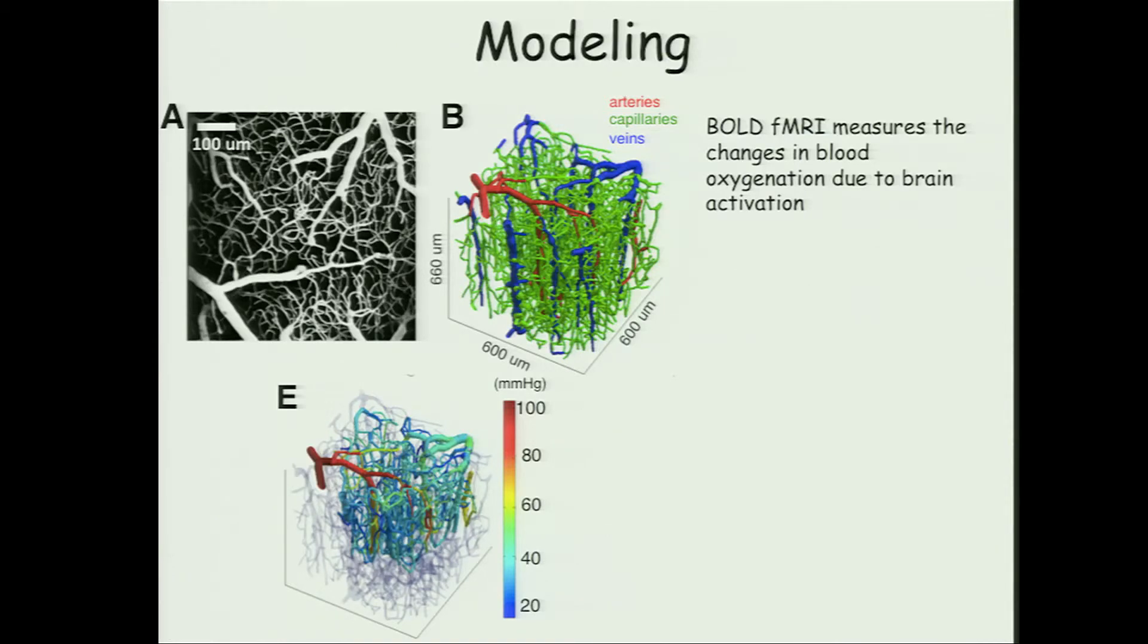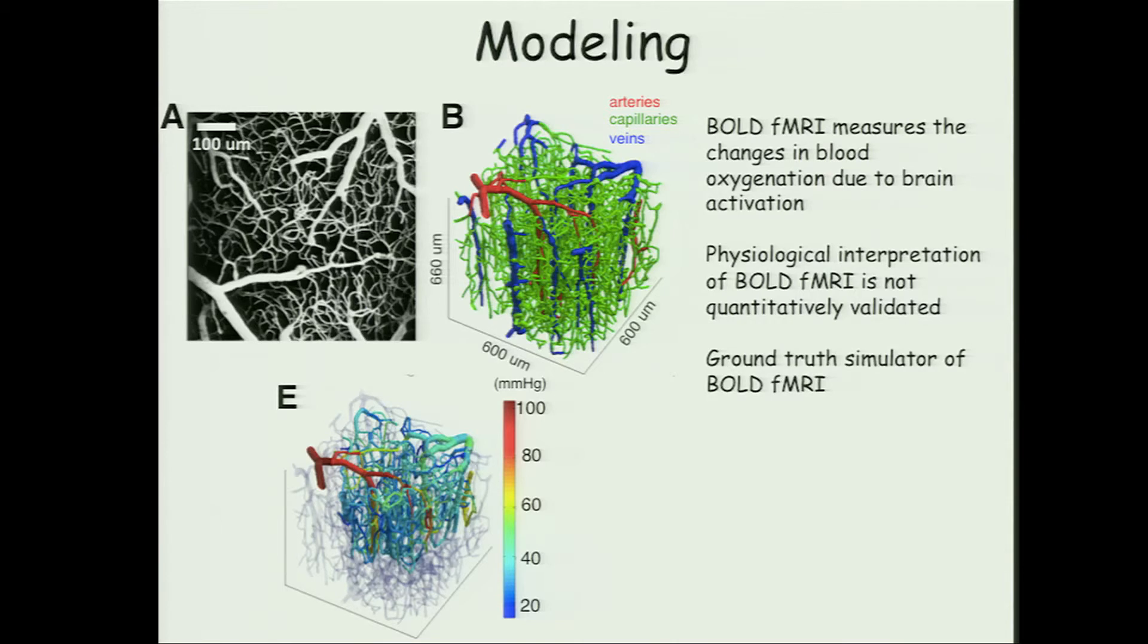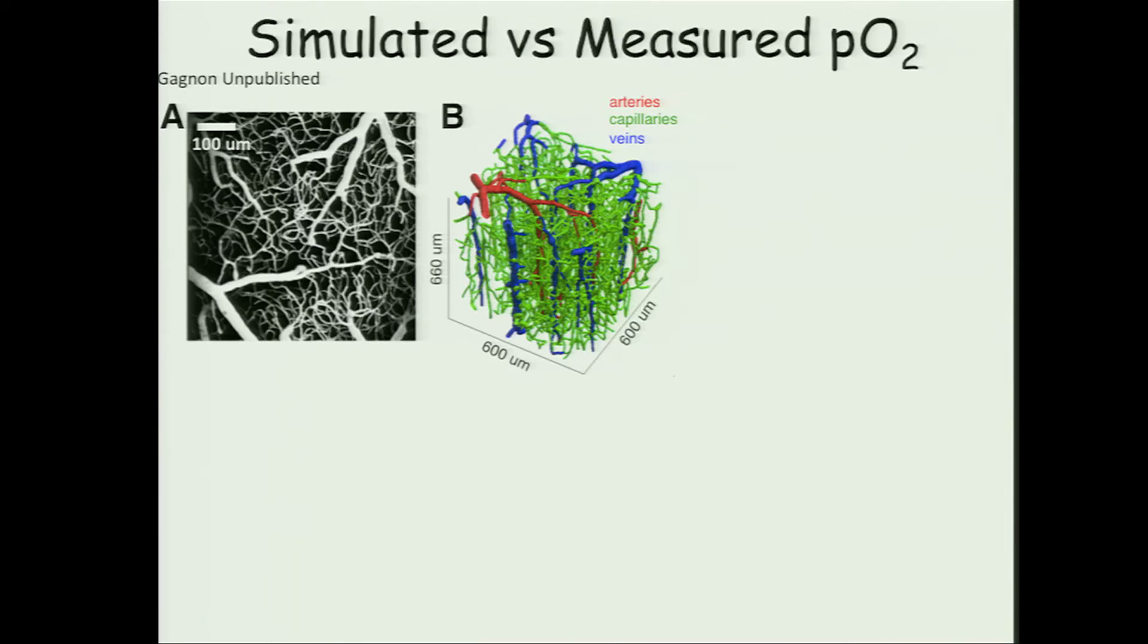For the second part of my talk, I'd like to tell you how we're bringing all of these microscopic measurements together to build a model of the fMRI measurement of blood oxygenation in the human brain. BOLD fMRI measures changes in blood oxygenation typically during brain activation tasks. The physiological interpretation of BOLD fMRI is not quantitatively validated, although it's used widely around the world. With these models, we're building a ground truth simulator of BOLD fMRI to guide quantitative physiological interpretation of the signals.